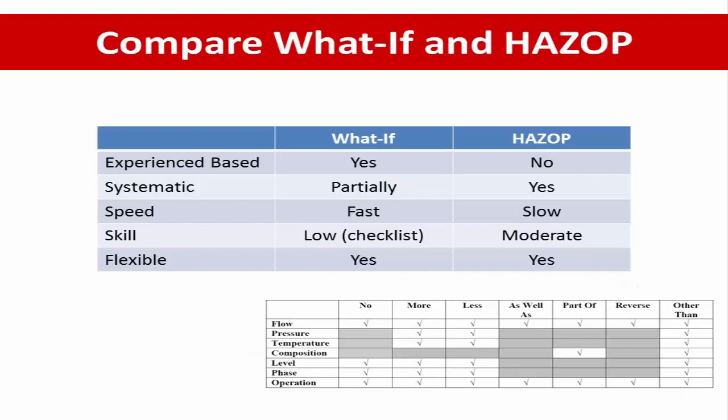If we compare What-If analysis to HAZOP, HAZOP — Hazard and Operability review — requires a moderate level of skill to implement. The HAZOP review is a systematic process which must be conducted in a proper fashion with accurate records. To perform a HAZOP review, a team leader is typically used with standard guide words to lead the review team during the process. HAZOP keywords include: more, less, high, low — as shown in the picture.